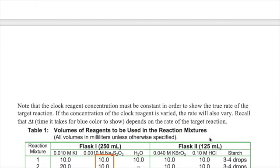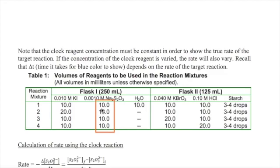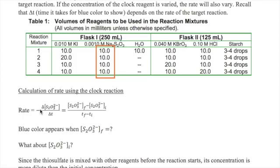So similarly in our experiment, the concentration of thiosulfate must be constant in each trial so that it doesn't mask the actual rate of the target reaction. So how do we actually calculate our rate then? Remember that the rate that we measure now is the rate of the disappearance of thiosulfate, which we can write as the negative change in thiosulfate concentration over change in time, which is just equal to final minus initial values of each variable.